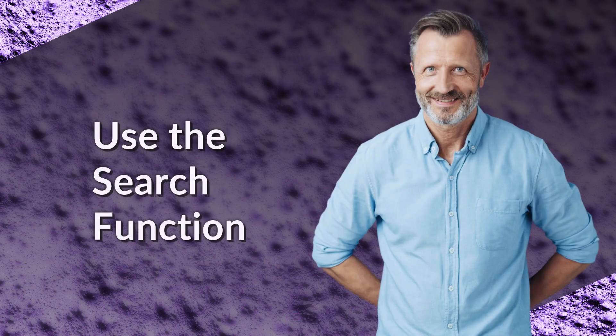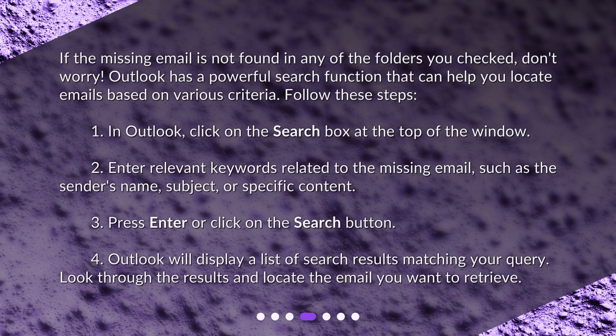Use the Search Function. If the missing email is not found in any of the folders you checked, don't worry. Outlook has a powerful search function that can help you locate emails based on various criteria. Follow these steps. 1. In Outlook, click on the search box at the top of the window.